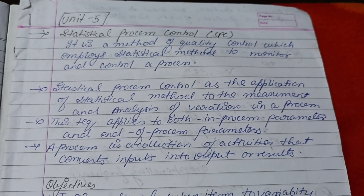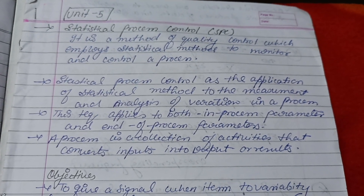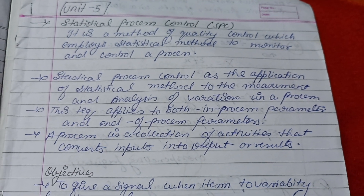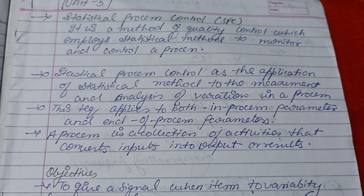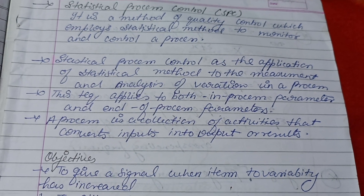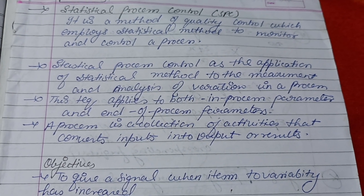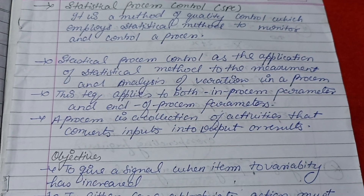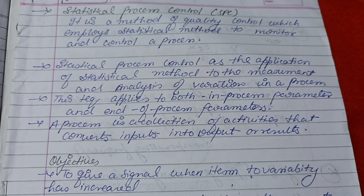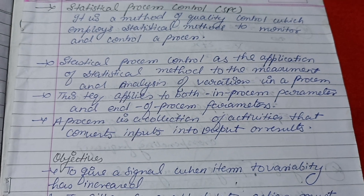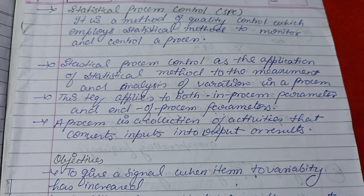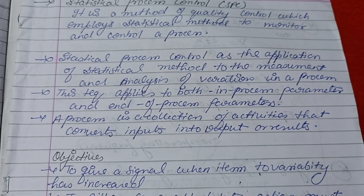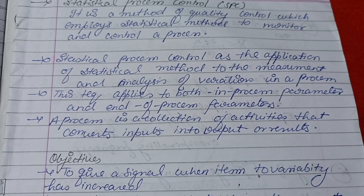Statistical Process Control is a method of quality control which employs statistical methods to monitor and control a process. Statistical process control is the application of statistical methods to measurement and analysis of variation in the process. This technique applies to both in-process parameters and end-of-process parameters. A process is a collection of activities that convert input into an output or a result.